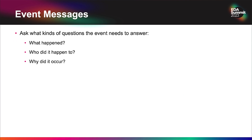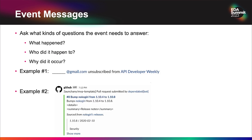When we think about event messages, we are addressing a different need. We're answering questions like: what happened, who did it happen to, and why did it occur? These notifications aren't asking us to do something — they're informing us of something that has already happened. One example: when someone subscribes or unsubscribes from my newsletter, API Developer Weekly, I get notified in a Slack channel. Another example is GitHub pull requests — you get details about who submitted it, the commit hash, and all those details. Something already happened and now we're being notified.